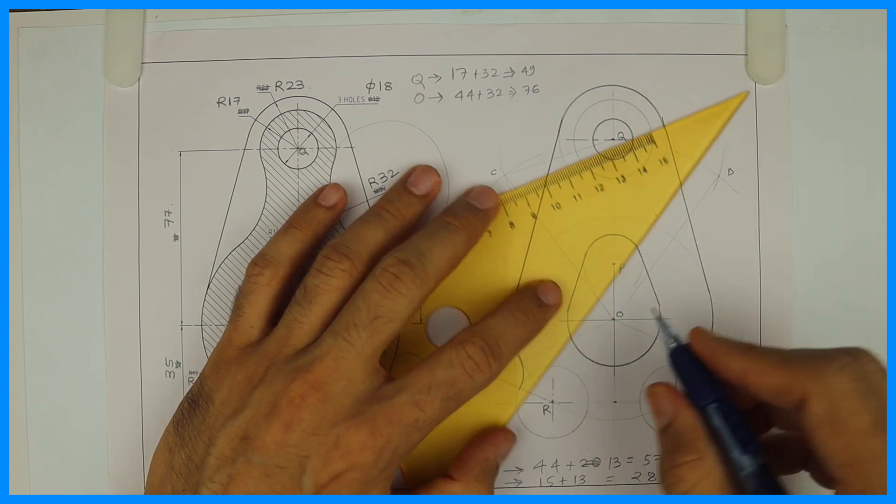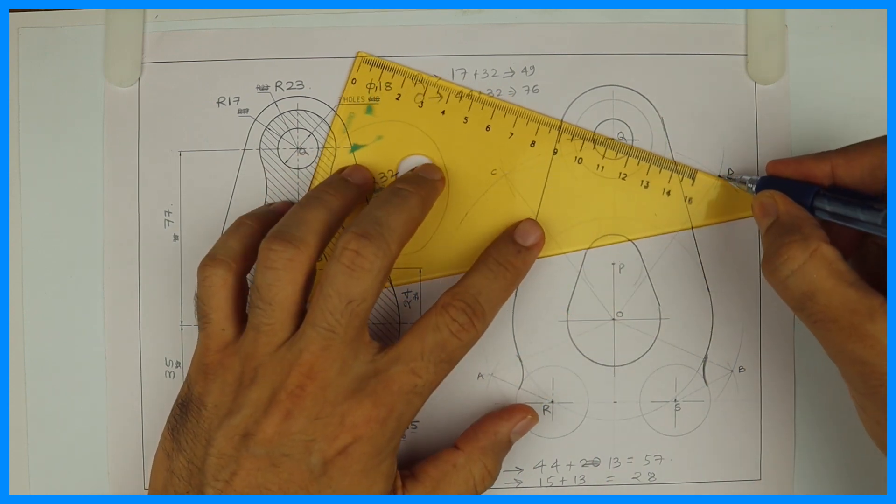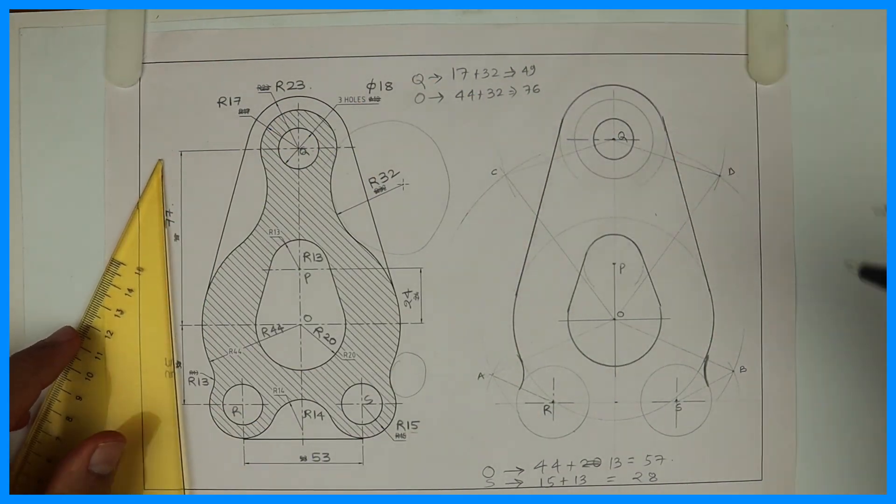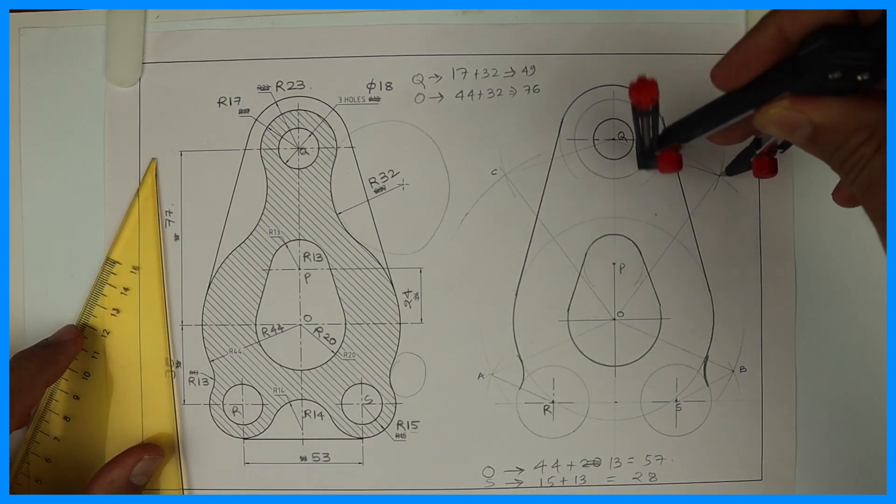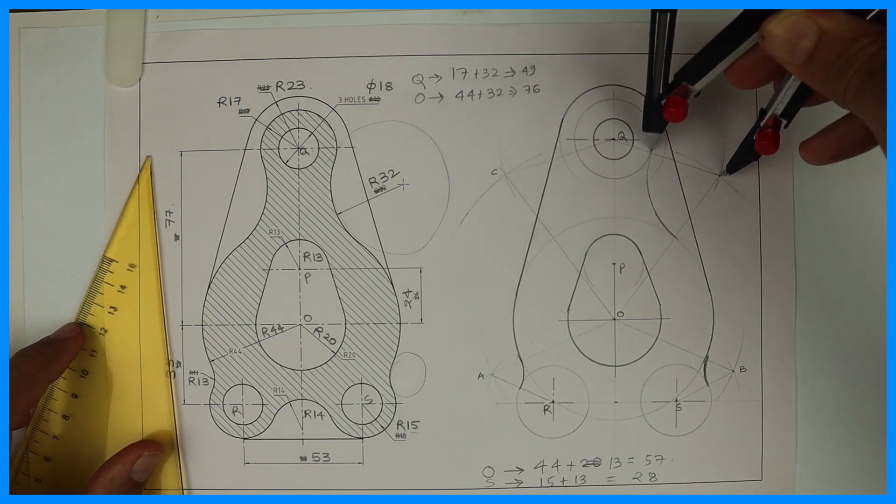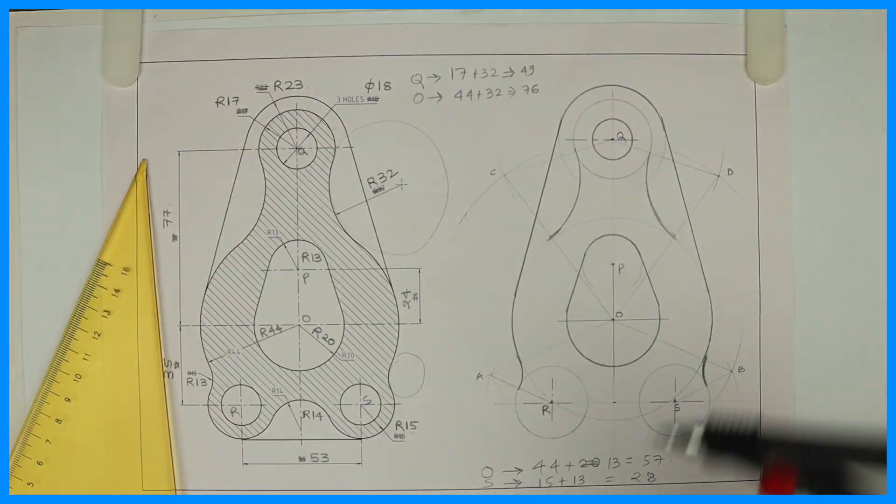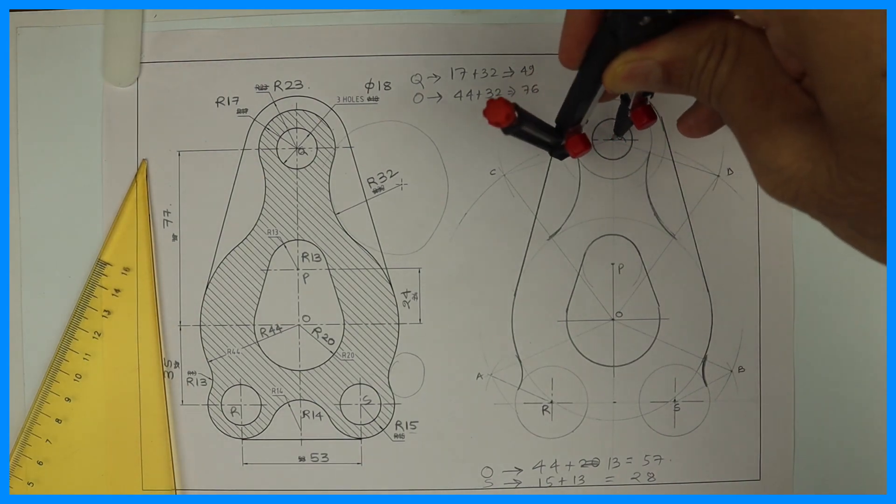So you'll get the exact point for radius 32, from where to where do we have to draw dark. See from here to here, 32. Now we can draw remaining circle dark.